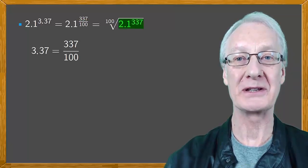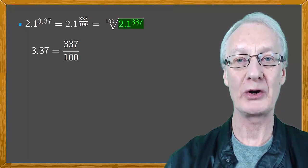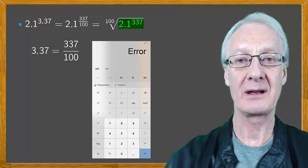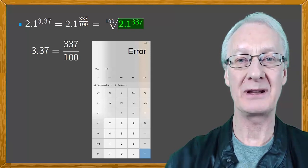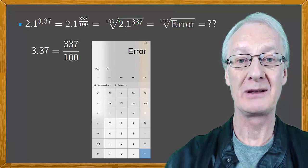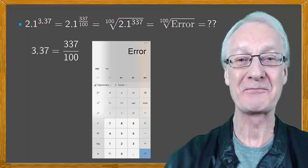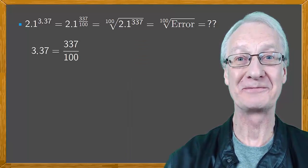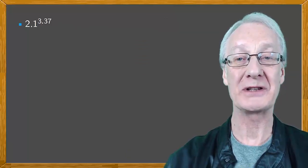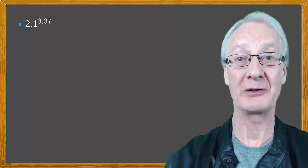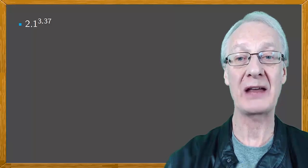Fine. I'll just put these numbers into the calculator — 2.1 raised to the 3.37. Uh-oh, gives me an error. It's telling me it can't work in this range, so that's a bit of a problem. Well, maybe you won't get an error — maybe you've got a more expensive calculator that can handle bigger numbers. Anyway, it would be good to have an alternative method that we could use, that didn't depend on calculators, and for which we understood the maths behind.